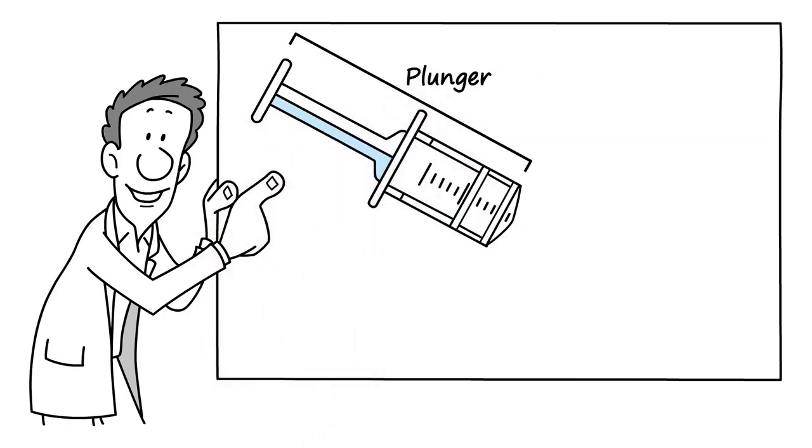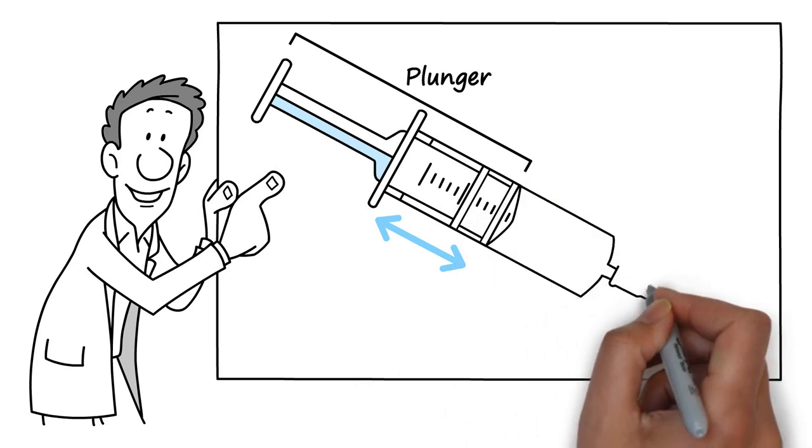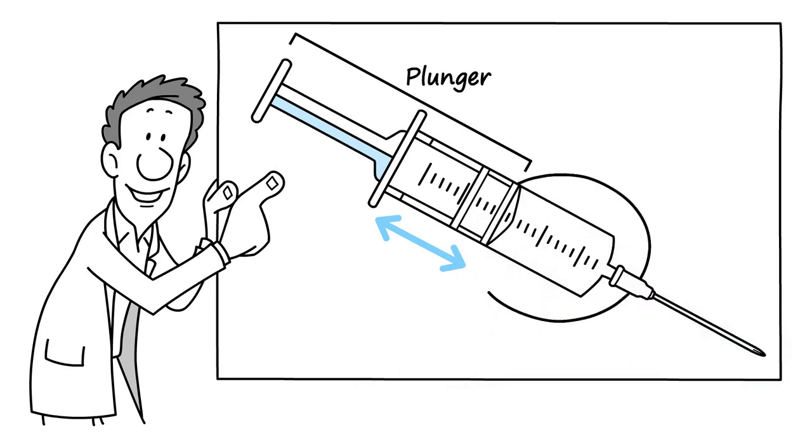The first is the plunger, also called a piston. The plunger moves freely in the syringe and creates the vacuum to pull liquid into the syringe. Plungers in disposable syringes can be either all plastic or have a rubber tip.